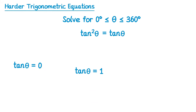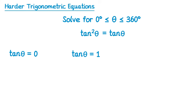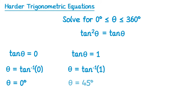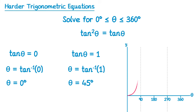Let's solve both in the usual way. We do inverse tan of 0, which is 0, and inverse tan of 1, which is 45 degrees. Now we use the graph to find remaining solutions. Drawing the graph of y equals tan theta and a horizontal line at 0, you can see three solutions: 0, which we already have, and also 180 and 360.